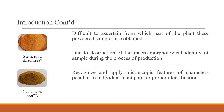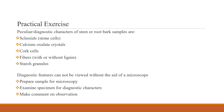Therefore, there is the need to recognize and apply microscopic features and characters that are peculiar to individual parts of the plant for proper identification. Diagnostic characters used in the identification of stem or root bark samples include sclerids, calcium oxalate crystals, cork cells, lignified and non-lignified fibers, and starch granules.